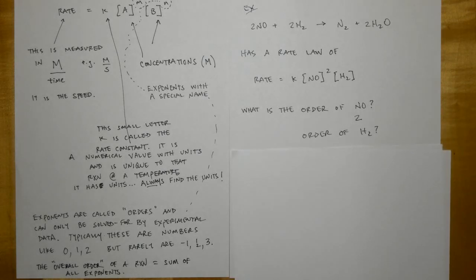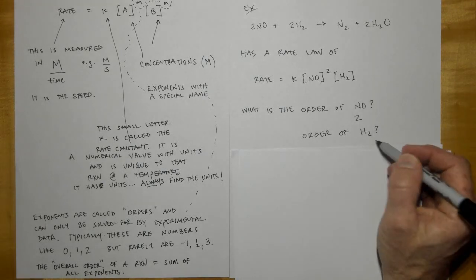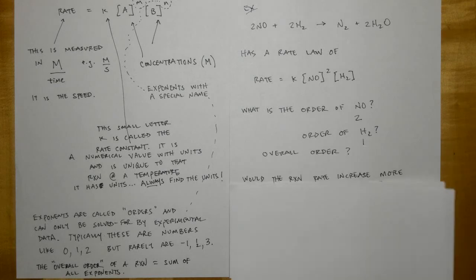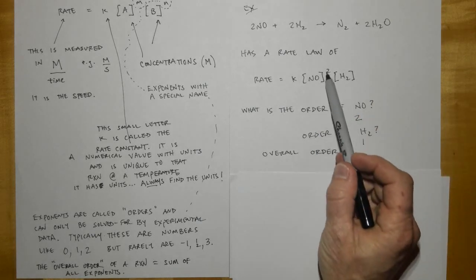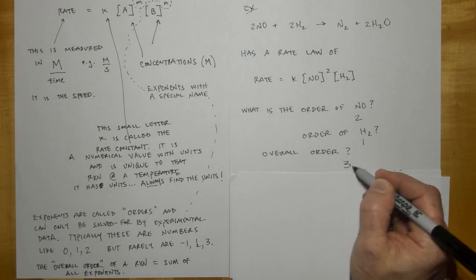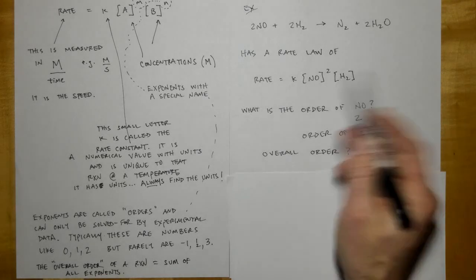What is the order of H2? H2 has a 1 up above it even though you can't see it, so it is first order. And what is the overall order of this particular reaction? The overall order would be the sum then of this exponent plus this exponent, and so this would be called a third order reaction. The overall order is just add the exponents up.